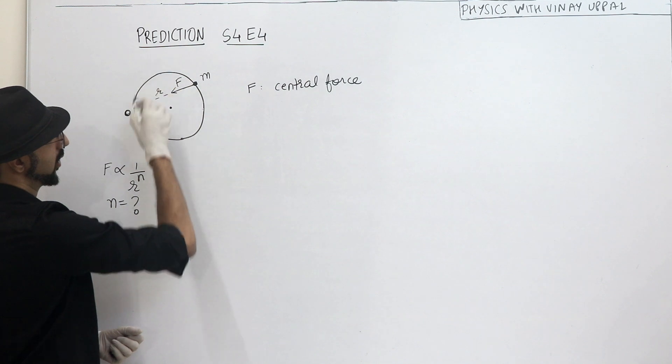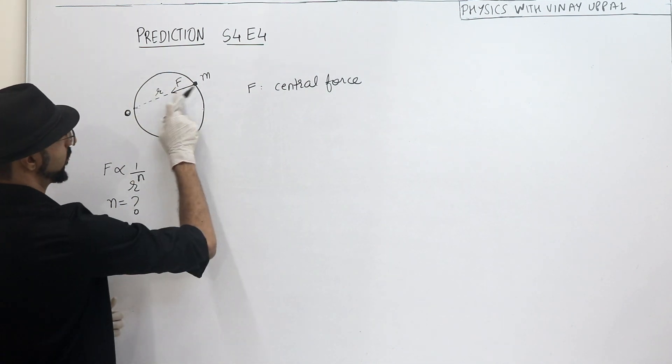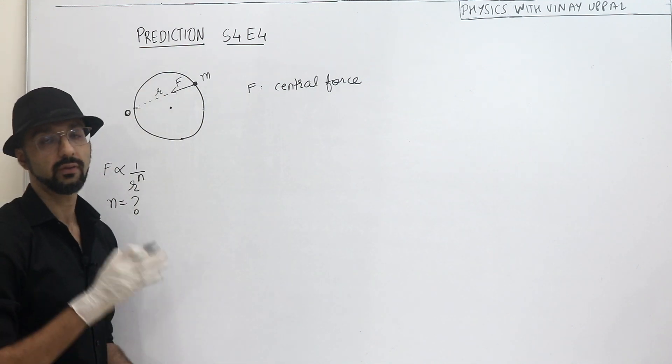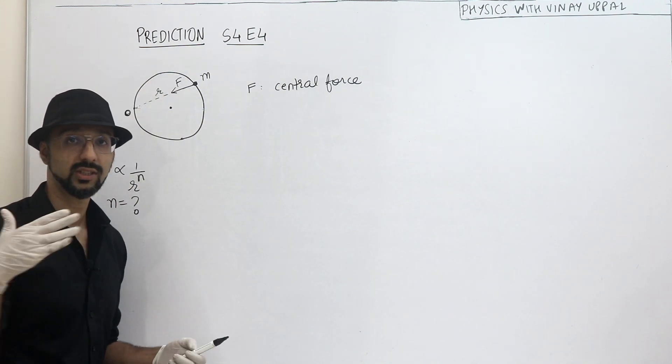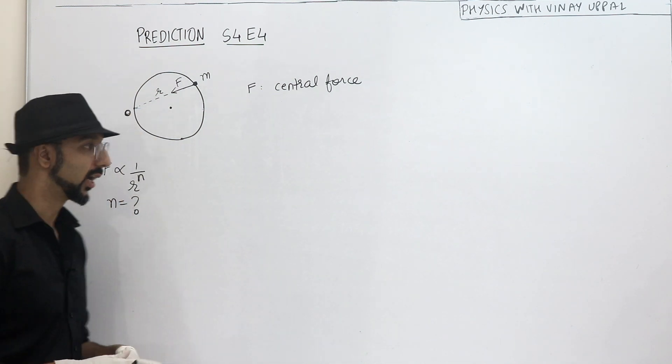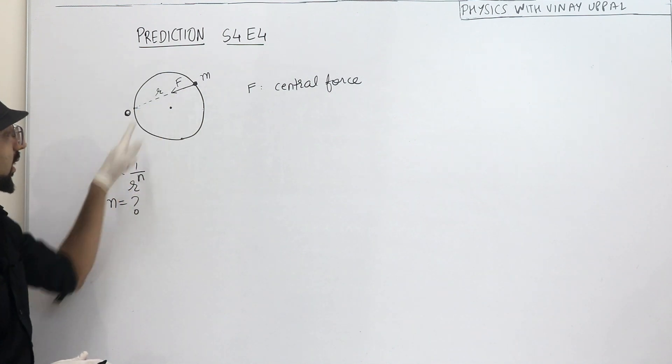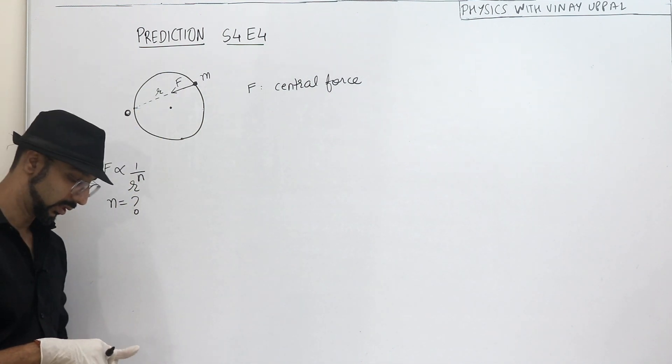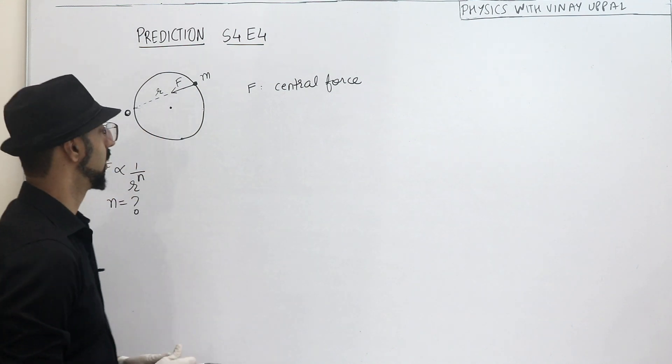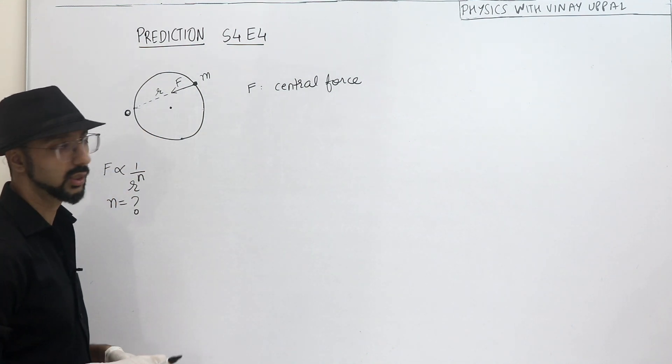So this particle is performing circular motion under the influence of this force. If there is no other force, only this force can influence the particle's circular motion. And this force is a central force which is pointing towards a fixed point, and that fixed point is on the circle itself. So the question is that this force depends on the nth power of r. If you want, you can pause the video and try it out. Otherwise, take a look at my solution and see if you have gotten it correct.